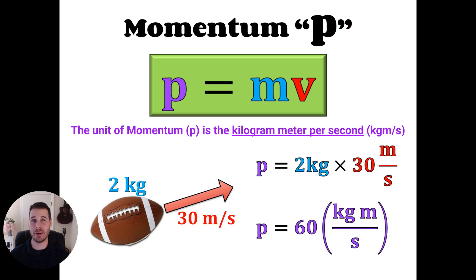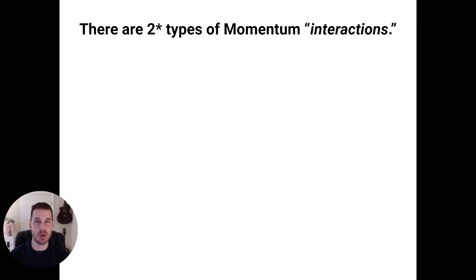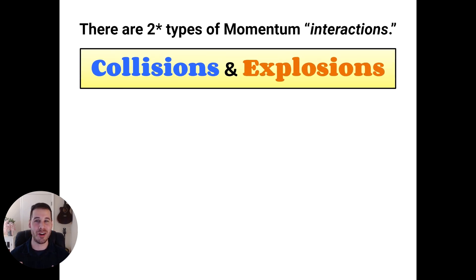Now this formula is very powerful. It can allow you to do things like predict the future and even look into the past. So let's see what kind of interactions in our universe are based on momentum so that we can use this formula to do cool stuff. Well, there are two types of momentum interactions. And I've got a little asterisk next to that too, because technically there's three and they are collisions and explosions. The third is going to be just a second type of collision.